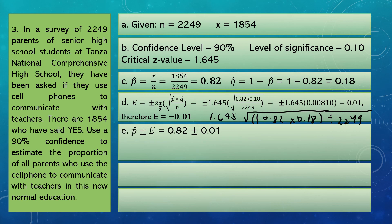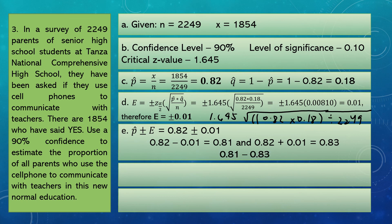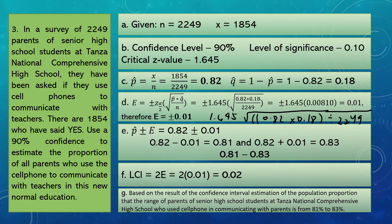For the confidence interval, we compute P-hat plus or minus E: 0.82 plus or minus 0.01. So 0.82 minus 0.01 equals 0.81, and 0.82 plus 0.01 equals 0.83. Our confidence interval estimation is 0.81 to 0.83. For the length of confidence interval, LCI equals 2E: 2 times 0.01 equals 0.02. Based on the result, the proportion of parents of senior high school students at the National Comprehensive High School who use cell phones to communicate with teachers is from 81% to 83%.